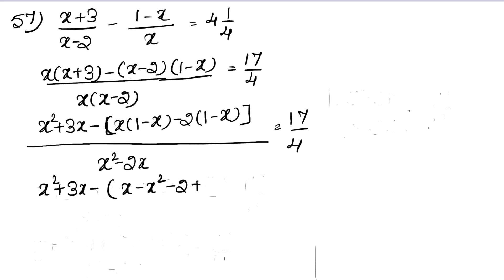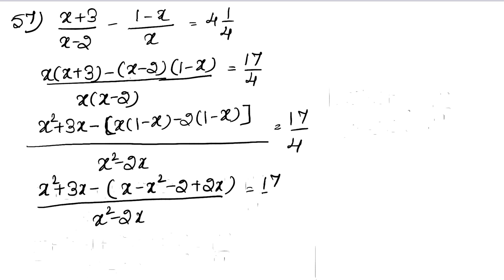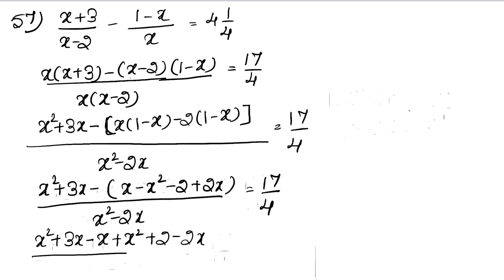After taking the LCM and opening the brackets, we get: x(x+3) - (x-2) upon x(x-2) equals to 17/4. Further opening the bracket gives: 3x minus x plus x² plus 2 minus 2x upon x² minus 2x equals to 17/4.